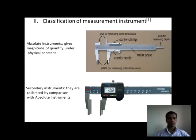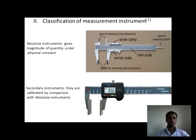The second point is classification of mechanical measurement. Classification consists of: first, absolute instrument; second, secondary instrument. An absolute instrument gives you the magnitude of a quantity under physical constants. For example, a vernier caliper is considered a standard instrument — we do not have to compare it with another standard. A secondary instrument is calibrated by comparing it with an absolute instrument. For example, a digital vernier caliper can be calibrated by comparing it with a standard or classical vernier caliper.